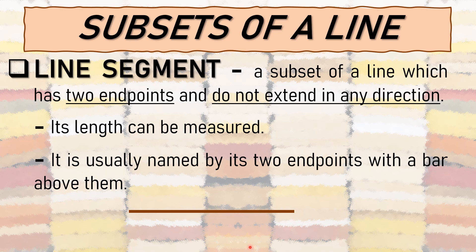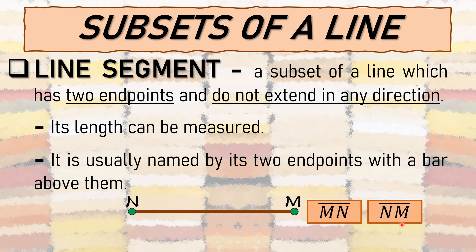A line segment is named using the names of its two endpoints with a bar above them. For example, with endpoints point N and point M, we can name it as segment MN or segment NM — the two points can be interchanged in position, since they are both endpoints. This is different from a ray, where the endpoint must always come first in the name.